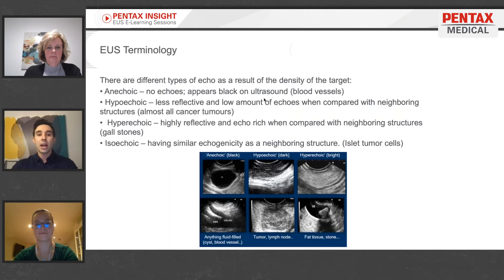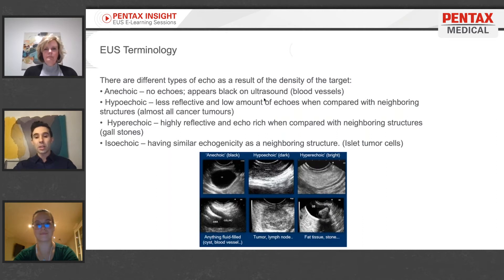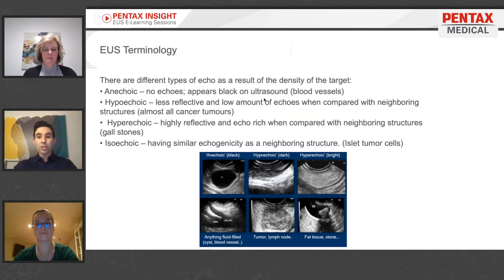Hyperechoic, as you can now deduce, is high reflectivity or a high frequency of echoes returning to the transducer. That would include things such as calcium deposits, fat-rich substances, and stone disease, which we'll come to shortly. Those things tend to be bright white or higher density on the EUS probe compared to adjacent structures. And then there are some things that are isoechoic — very similar, if not identical, echogenicity to the neighboring structure. Neuroendocrine tumors in the pancreas, for example, can be isoechoic, making them quite subtle and difficult to find because they have a very similar returning signal as the adjacent pancreatic tissue.